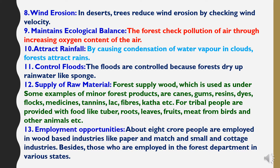Eleventh, control floods: floods are controlled because forests absorb rainwater like a sponge. Twelfth, supply of raw material: forests supply wood, and minor forest products include canes, gums, resins, dyes, flocks, medicines, tannins, and fibers. For tribal people, forests provide food like tubers, roots, leaves, fruits, and meat from birds and other animals. Thirteenth, employment opportunities: about eight crore people are employed in wood-based industries like paper and pulp factories, small and cottage industries, besides those employed in forest departments in various states.